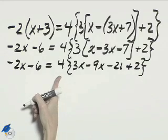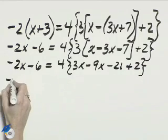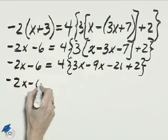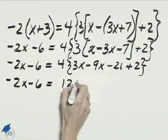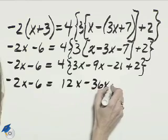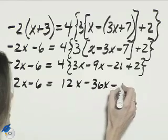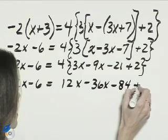Now let's multiply everything through by 4 on the right hand side. Negative 2x minus 6 on the left. This will be 12x minus 36x minus 84 plus 8.